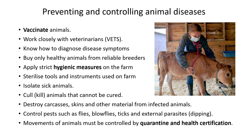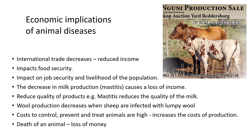The economic implications of animal diseases: international trade can decrease for countries, reducing income not just for one farm but for all farms in the country. It also impacts food security — if animals are diseased, you can't sell their products like wool, milk, or meat. It impacts job security too: with zoonotic disease outbreaks, nobody is allowed to work on the farm.